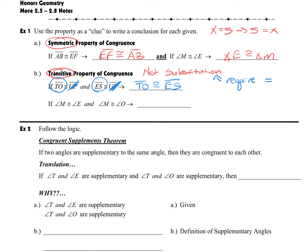We can do the same thing with our angles. Angle M is congruent to angle E, and angle M is congruent to angle O. What do these two congruent statements have in common? They both have angle M, so I can mark out the angle M's and I'll end up with angle E is congruent to angle O. We will talk a little bit more about how we recognize that when we are in class.